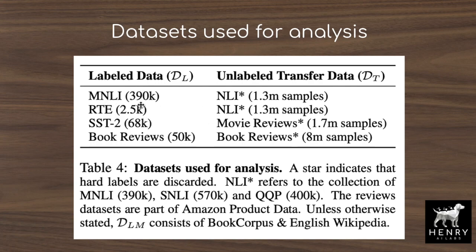The top two datasets describe natural language inference, where you have two sentences and determine if they are entailment or neutral — whether the first sentence implies the second. For unlabeled transfer data, they concatenate two different NLI datasets and also add the Quora question pairs dataset. Interestingly, Quora question pairs detects duplicate questions and doesn't overlap well with the NLI task. There's also an extreme data size mismatch — going from 1.3 million examples down to 2,500 labeled examples.